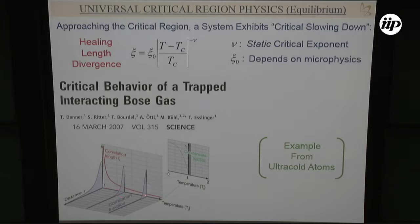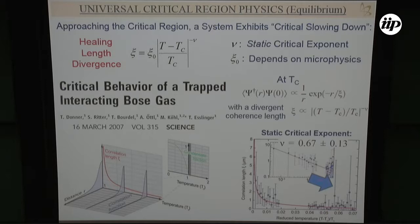You can see how the correlation length diverges as you approach equilibrium. Here's experimental data of the correlation length as a function of reduced temperature — epsilon, how close you are to the critical temperature — showing the divergence from above to below. With this data and large error bars, they can still get a critical exponent which agrees with the one seen in helium.